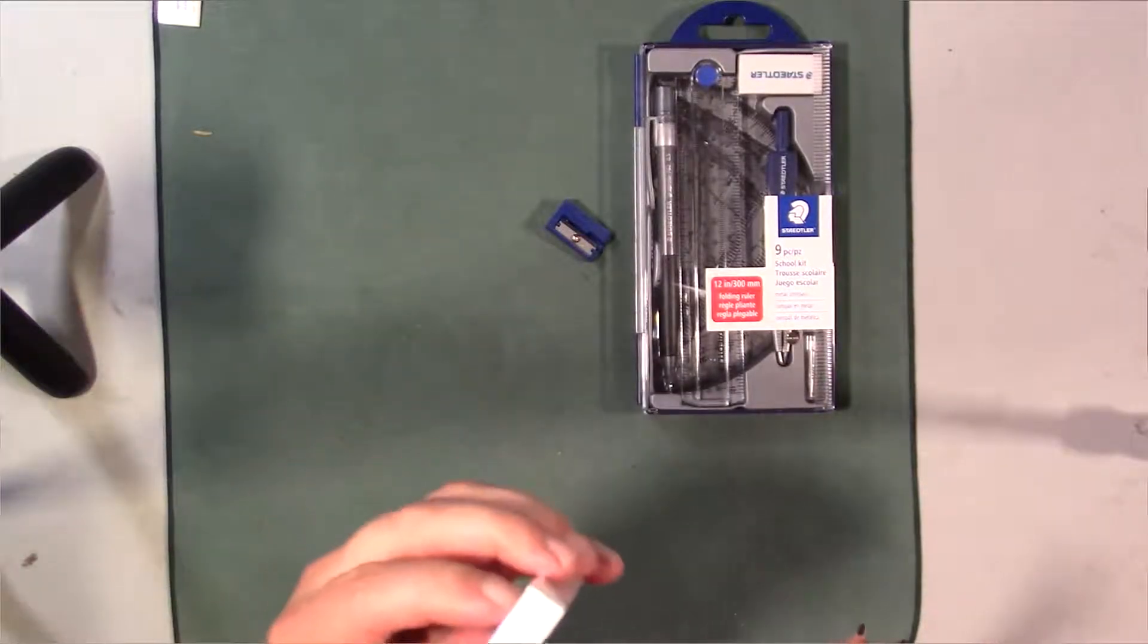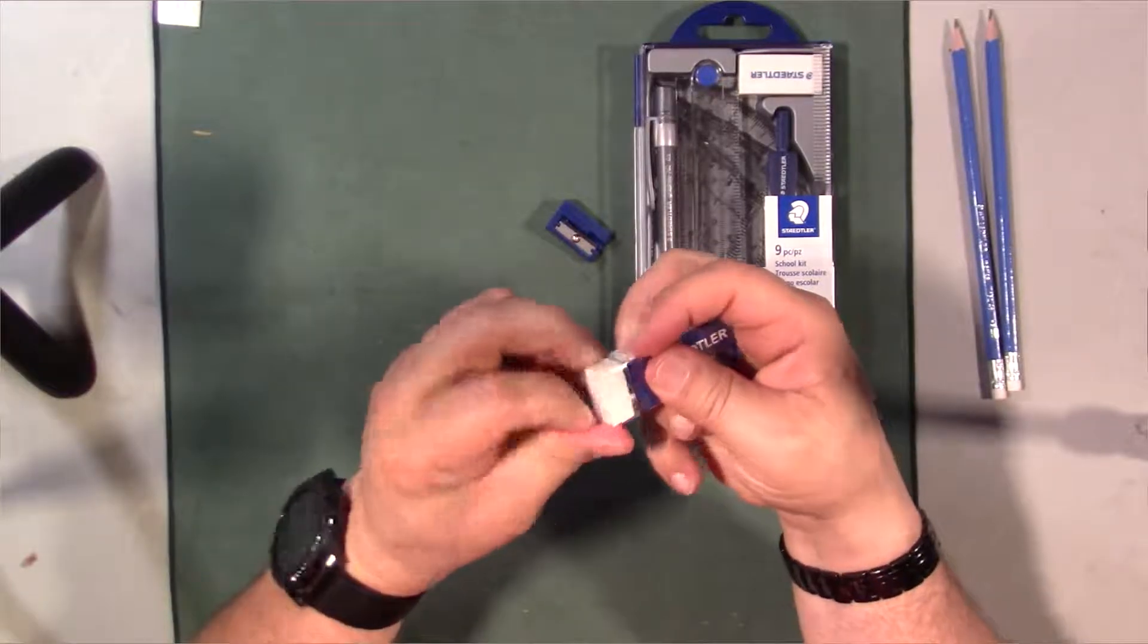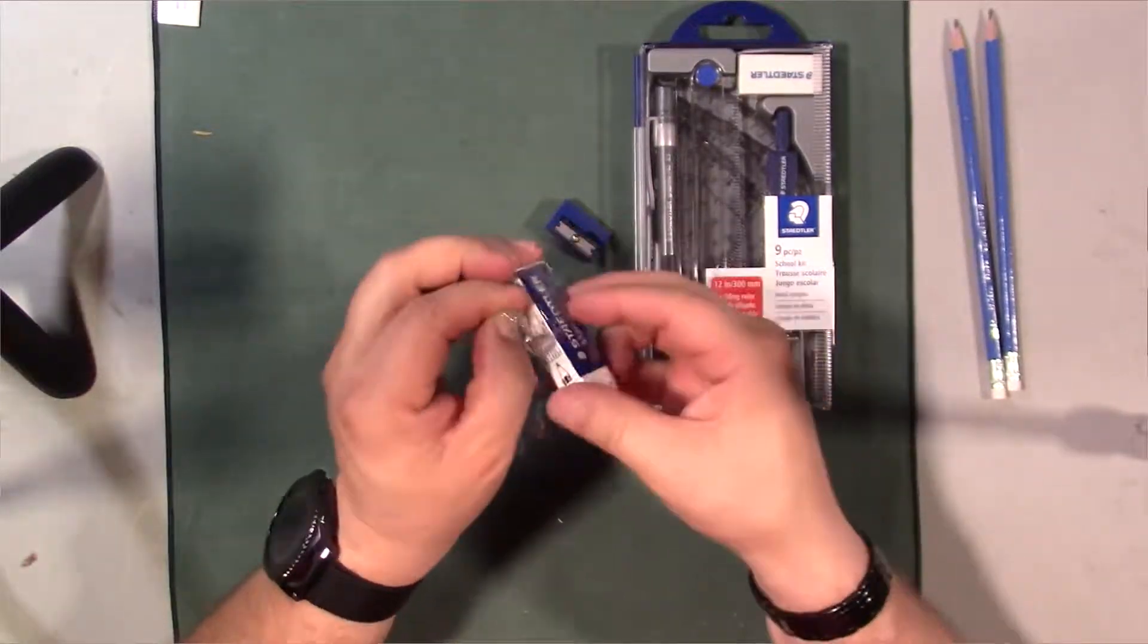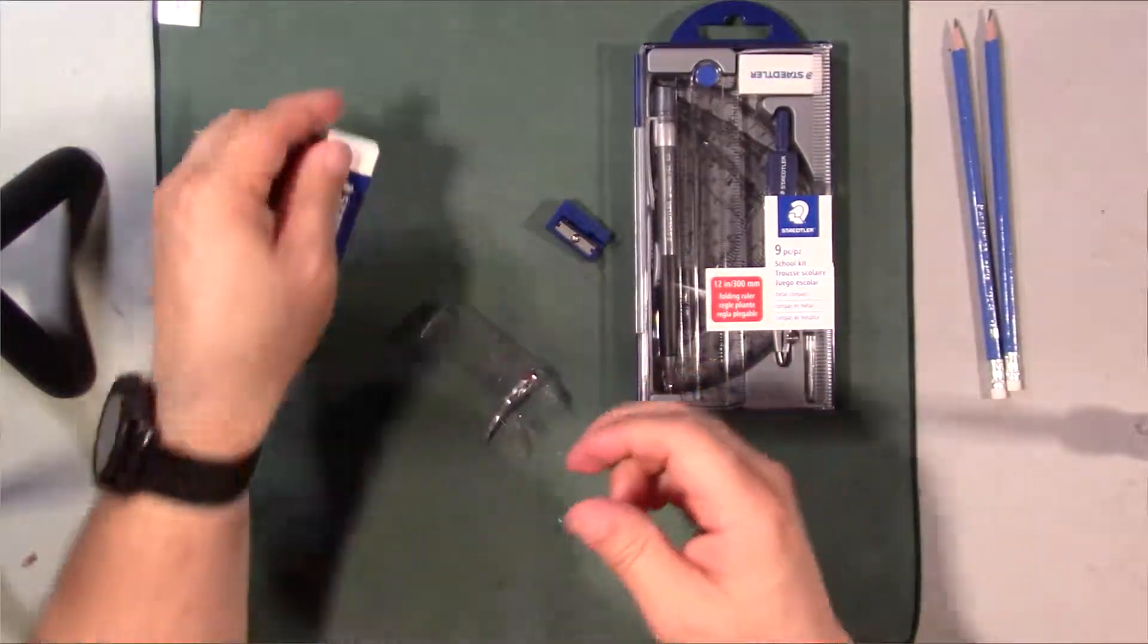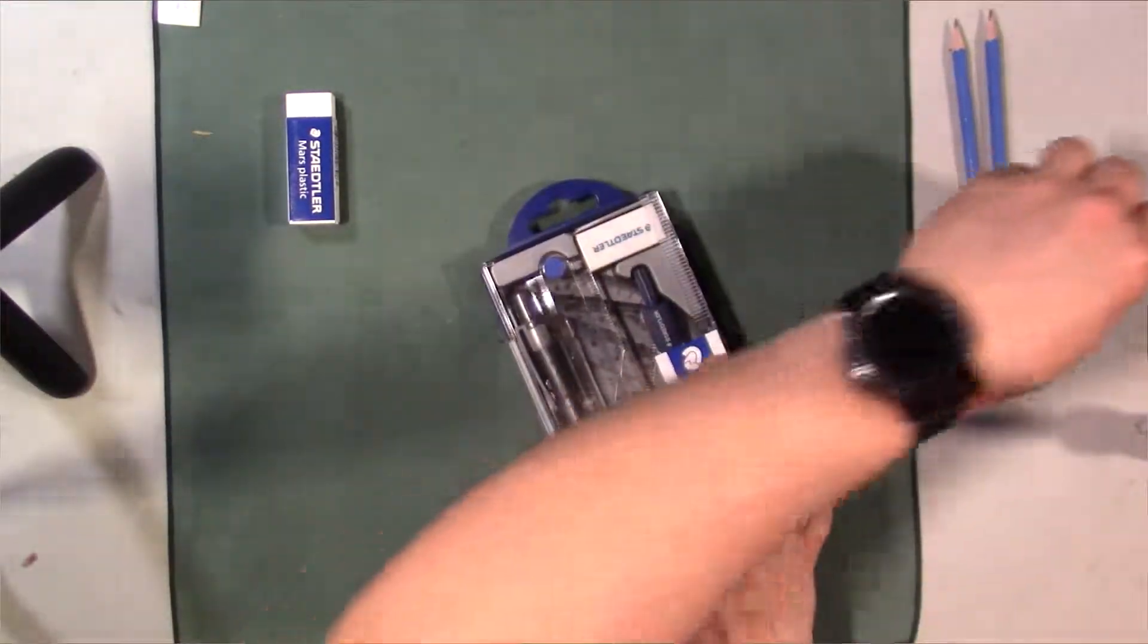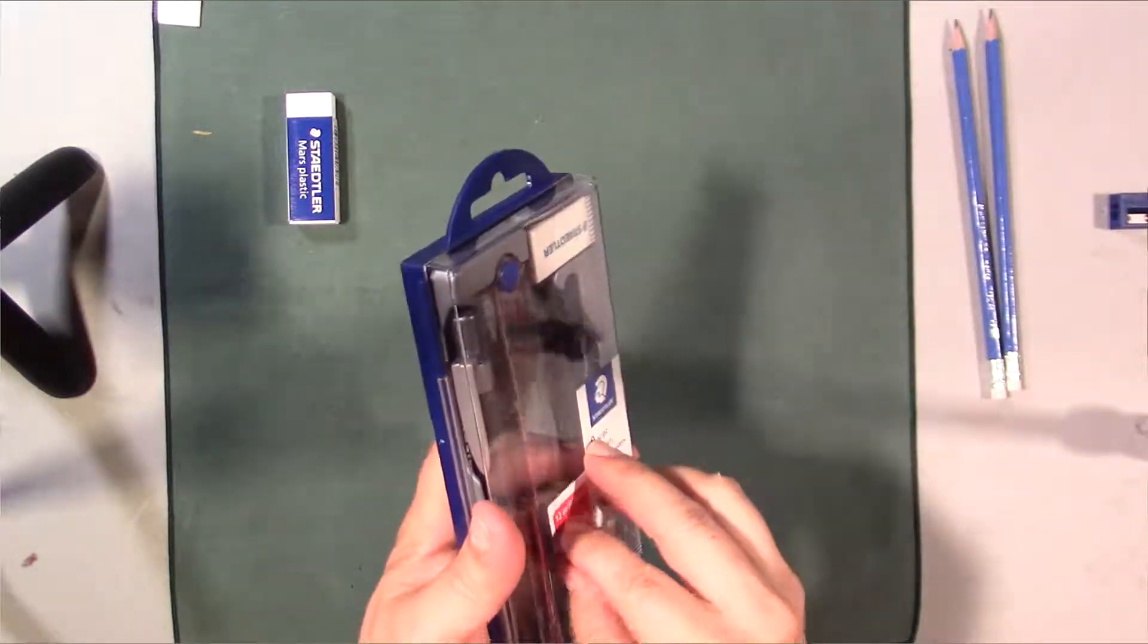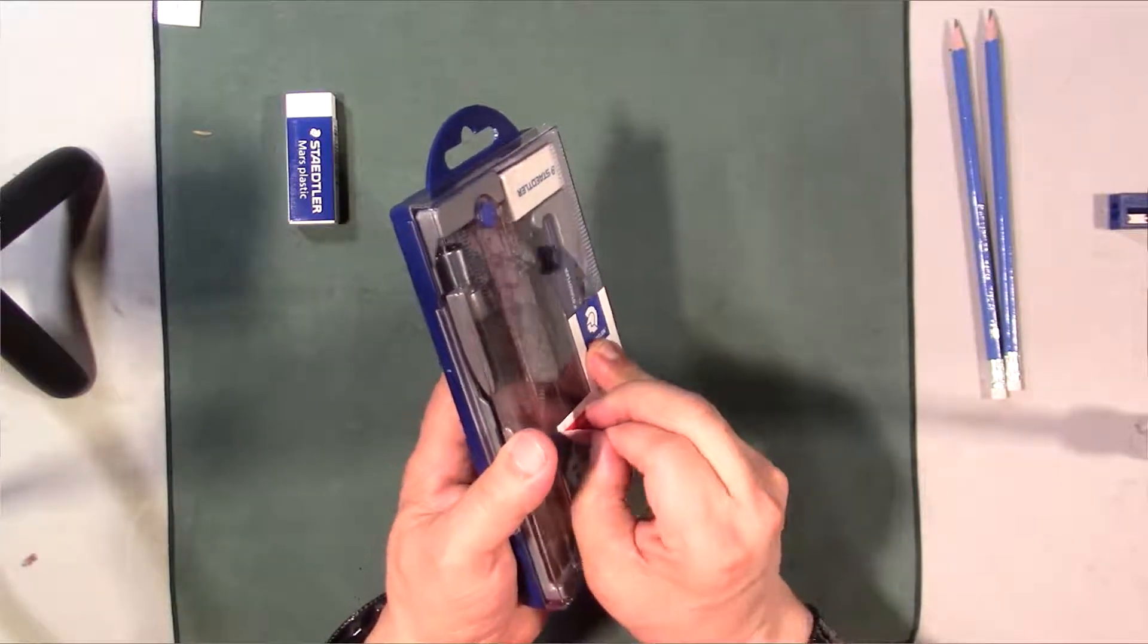We'll test out the eraser here, see how this works in a second. We'll take this off too. Might as well because I'm going to be testing it out. There's the eraser. Okay, let's take a look at this mechanical and this set here.